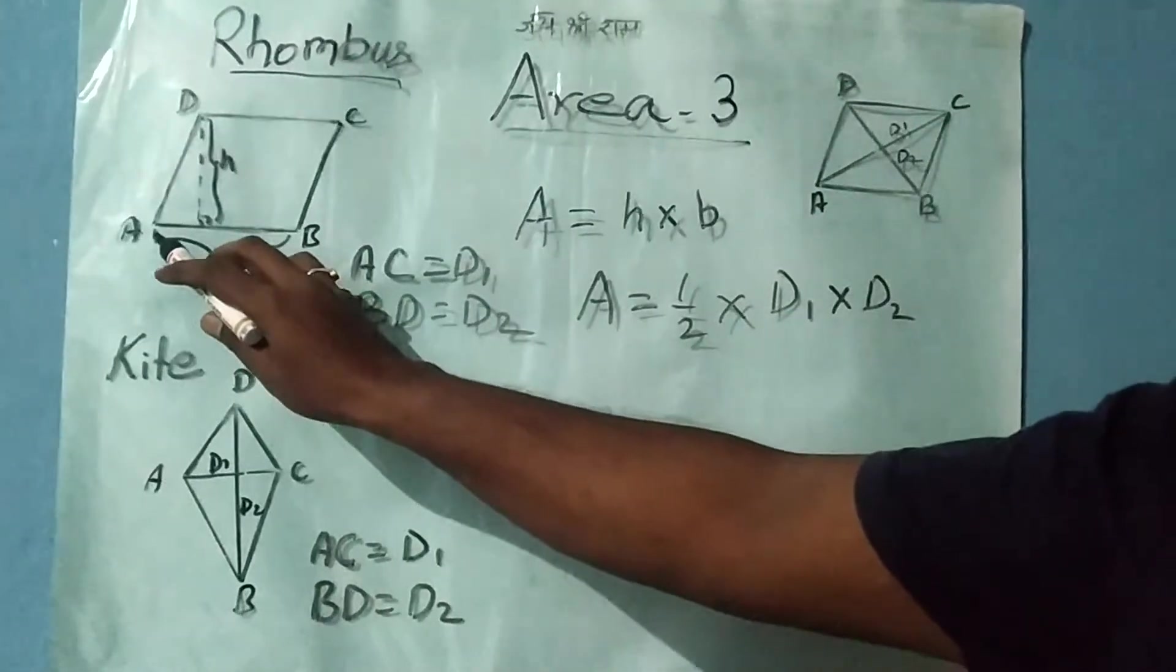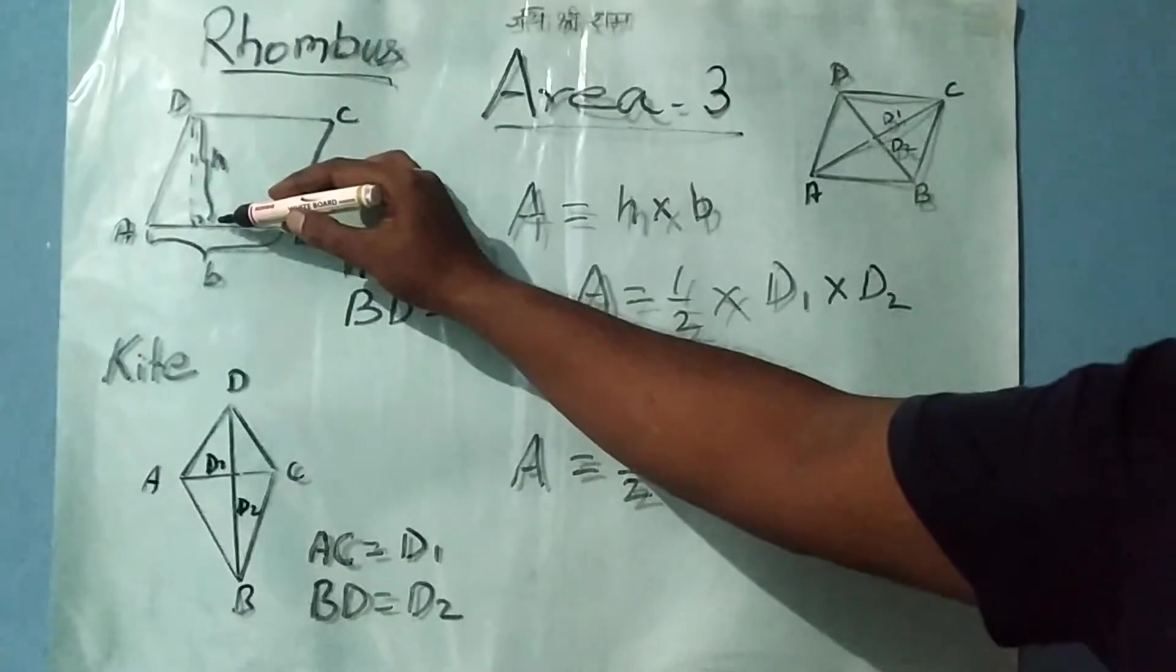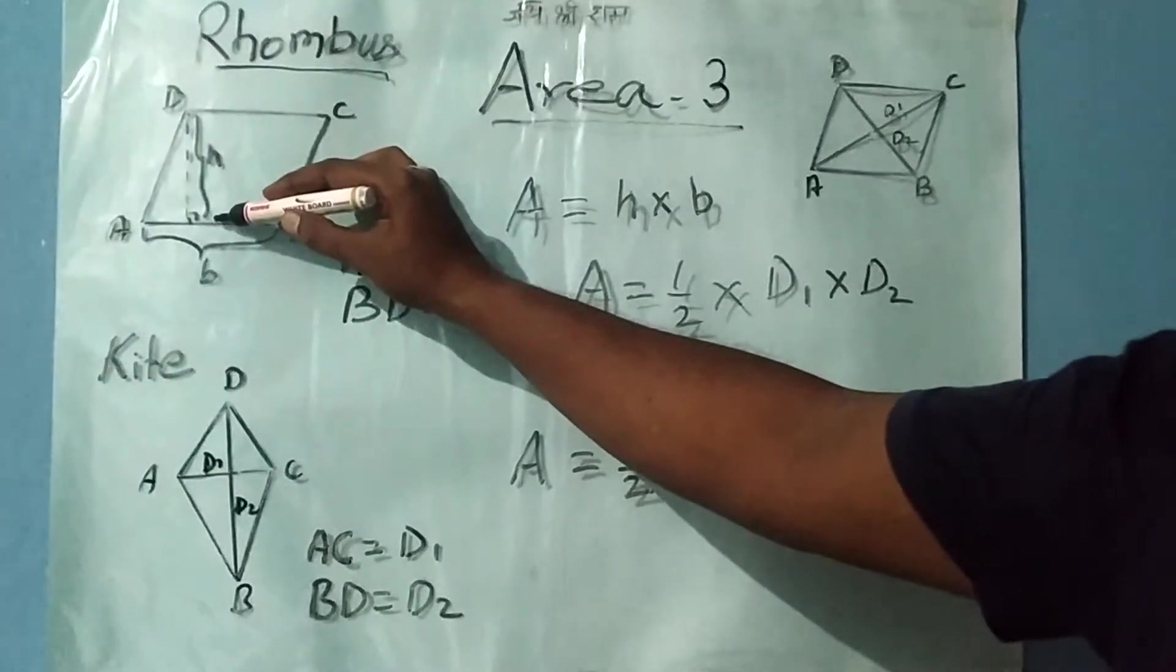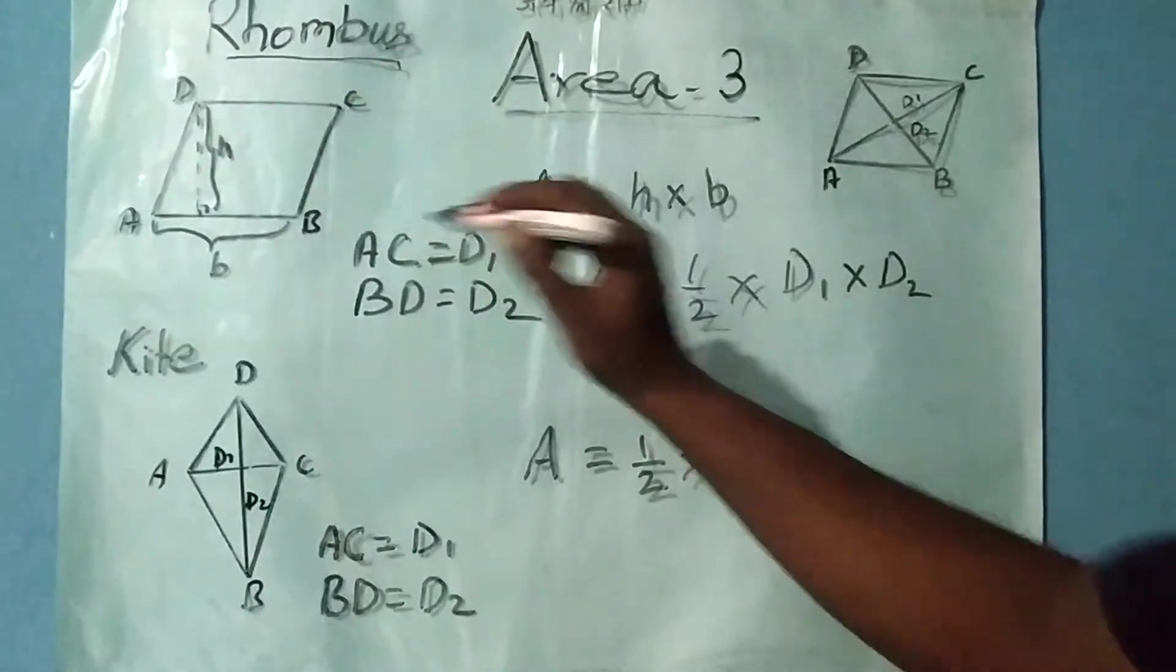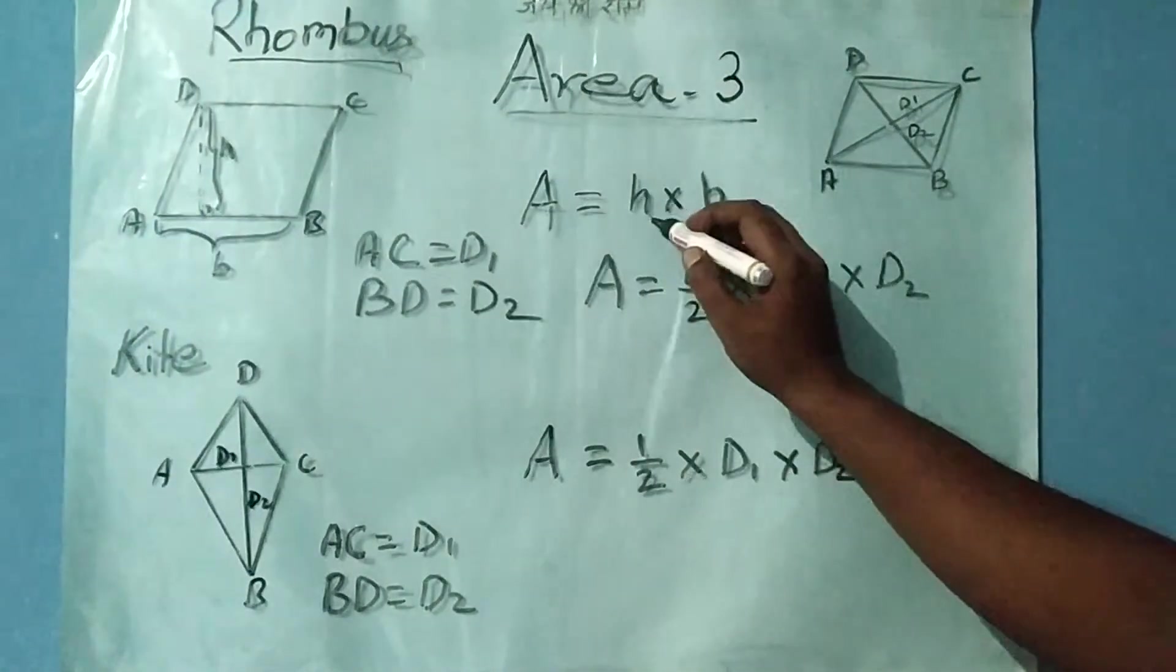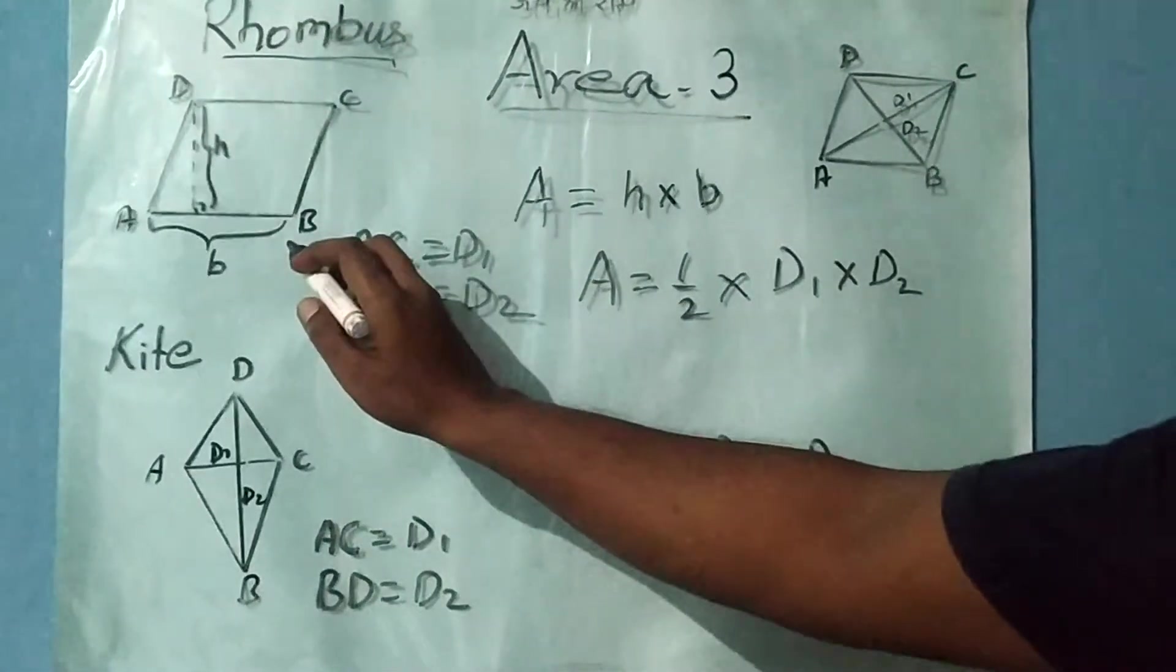Base is the length of side AB, and height is the distance from this line to this line, that is, the distance between two parallel lines. The area will be h × b, where h is the height and b is the length of side AB.